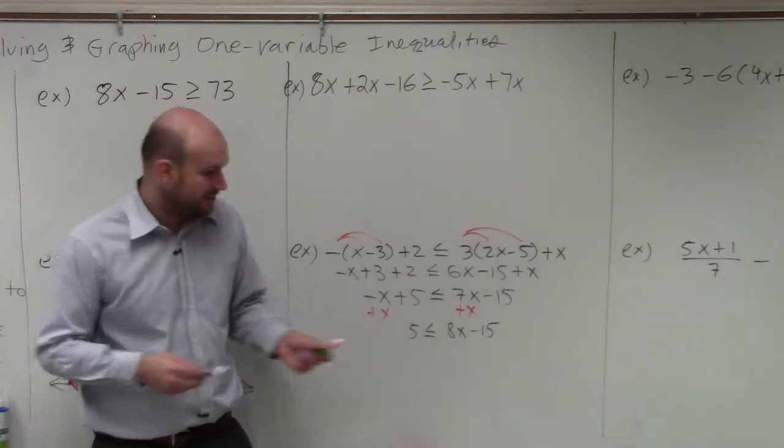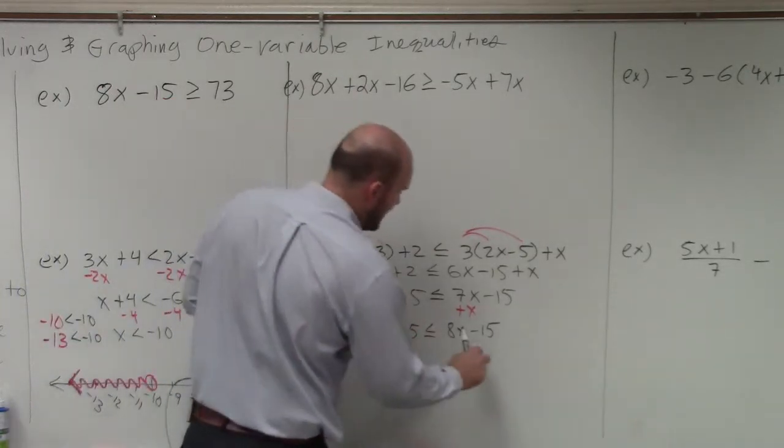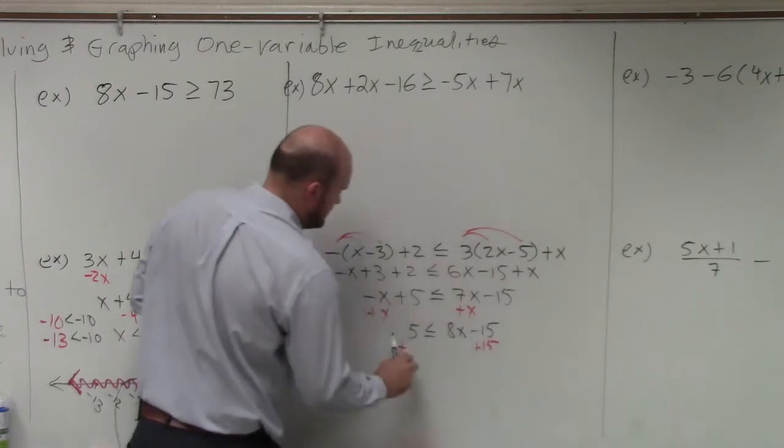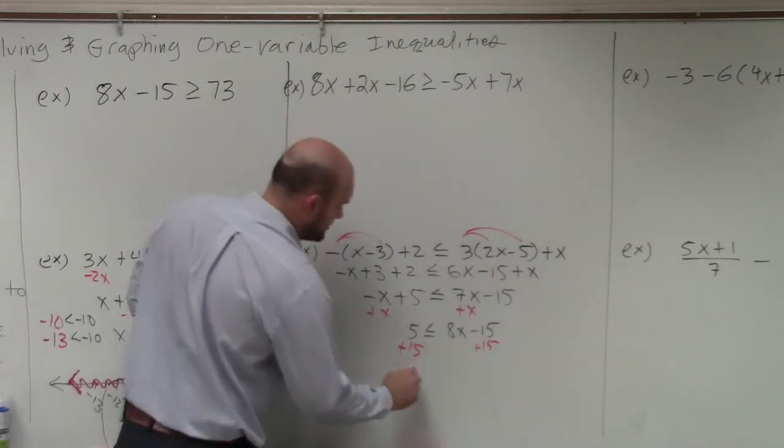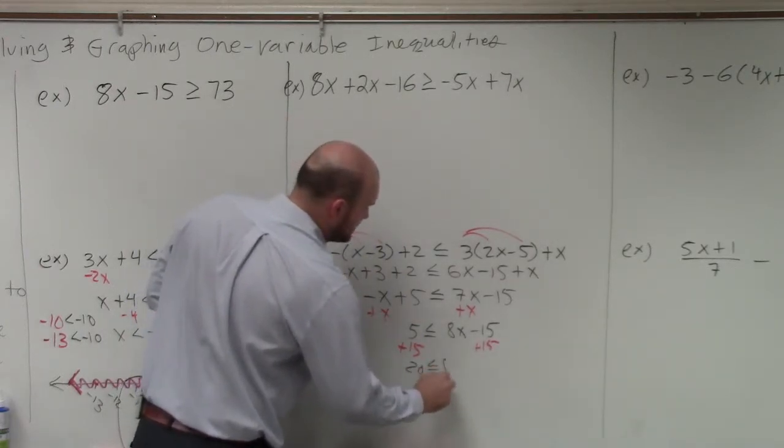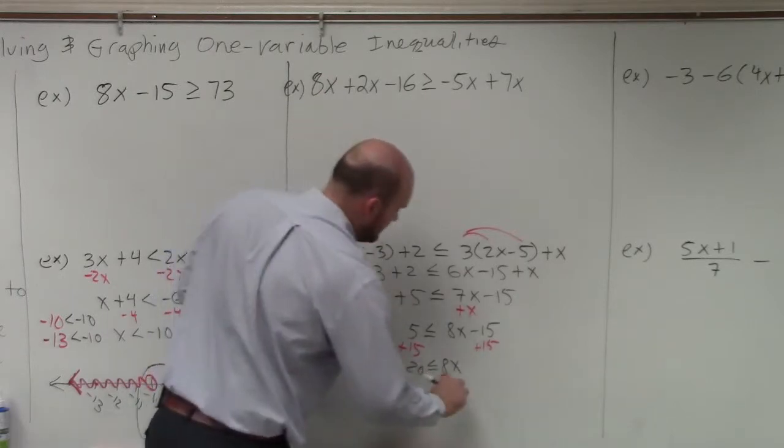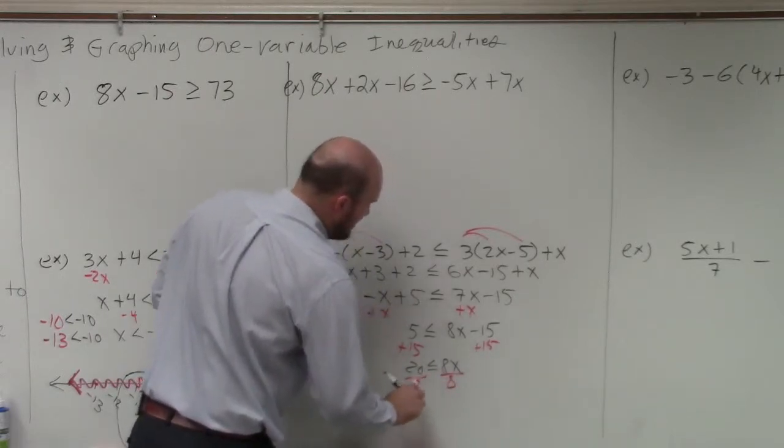Now, I just solve my inequality. So I add 15 to both sides. Ooh, this is a good one. 20 is less than or equal to 8x. Divide by 8. Divide by 8.